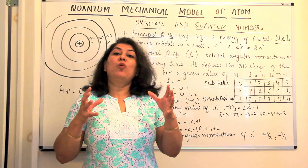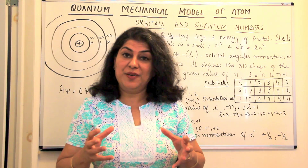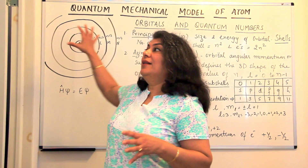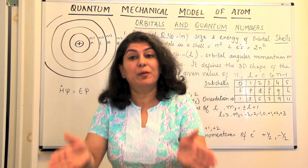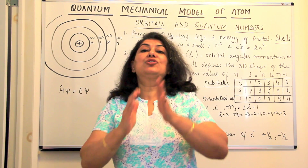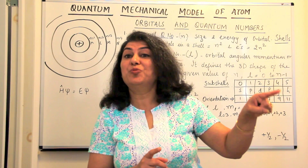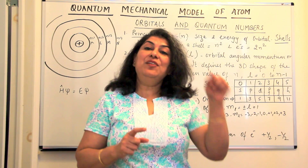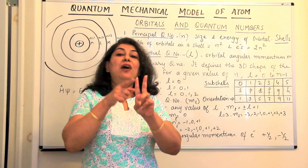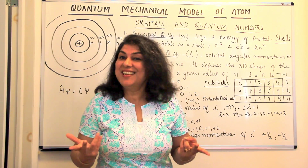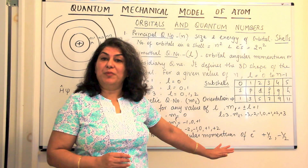This is what the quantum numbers do. They are a set of four numbers which tell you which shell the electron is in, then which sub-shell it is in, then which orbital within that sub-shell, and finally — since there are only two electrons in that orbital — which one of the two it is. That is the job of the four quantum numbers.